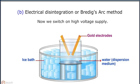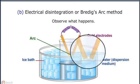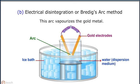Now we switch on high voltage supply. Observe what happens. This arc vaporizes the gold metal.